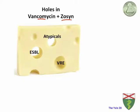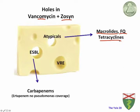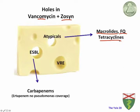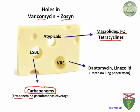To fill those holes: for atypicals, macrolides, fluoroquinolones like Cipro and Levo, and tetracyclines are great. For extended spectrum beta-lactamase producers, you need your big guns — the carbapenems. Remember: ertapenem has no Pseudomonas coverage, so you need to use meropenem instead. For VRE, daptomycin and linezolid help. One expert note: daptomycin does not penetrate lung tissue, so if you're worried about HCAP or MRSA pneumonia, do not use daptomycin to cover VRE.